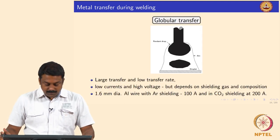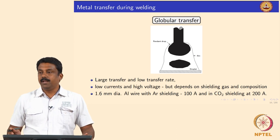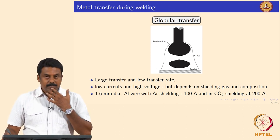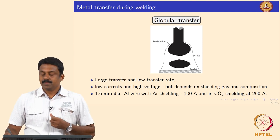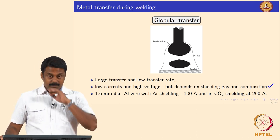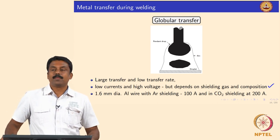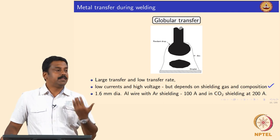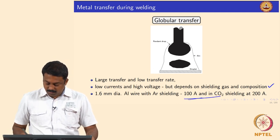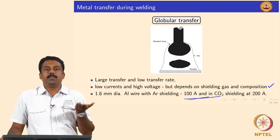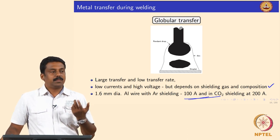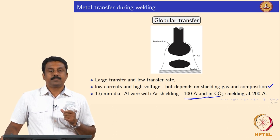The first mode is globular transfer, observed at very low current. Per transfer, you transfer more volume of metal — the droplet diameter will be very high. The plasma jet velocity is quite low and the current is low, so transfers are only assisted by gravity. For example, for a 1.2 mm low carbon steel wire welded at 50, 60, or 70 amperes, the transfer will most likely be globular transfer.